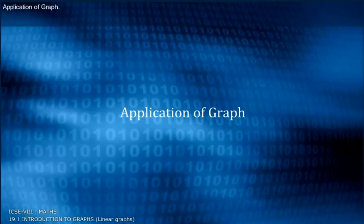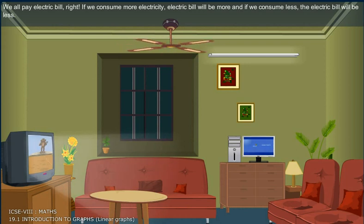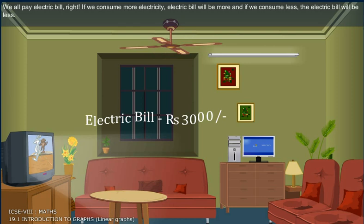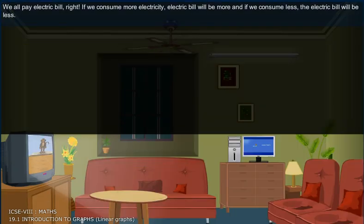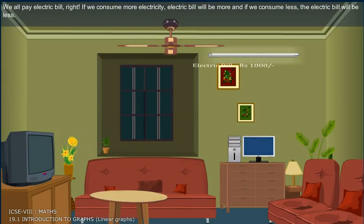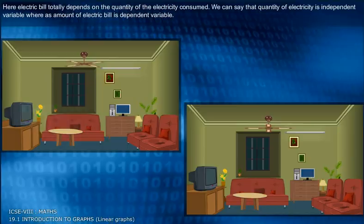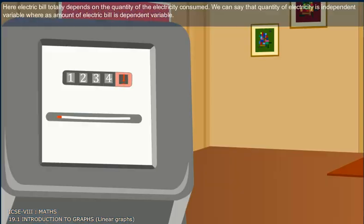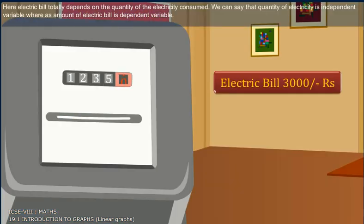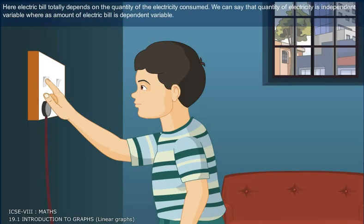Application of graphs. We all pay electric bills, right? If we consume more electricity, the electric bill will be more. And if we consume less, the electric bill will be less. Here, the electric bill totally depends on the quantity of electricity consumed. We can say that the quantity of electricity is the independent variable.